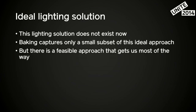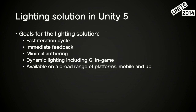This kind of solution doesn't quite exist yet. Many engines have tried to achieve this, but with limited success, and when it's worked, it's been restricted to a certain set of powerful platforms — and we want to try to widen that space a little bit. Baking is, as it indicates, completely static. Everything has to be static after you've done your bake. But we've found a feasible middle way that gets us most of the way towards the ideal solution. The goals are: fast iteration, the ability to refine lighting and make it perfect with immediate feedback, next to no authoring, fully dynamic lighting, and working on all your platforms.